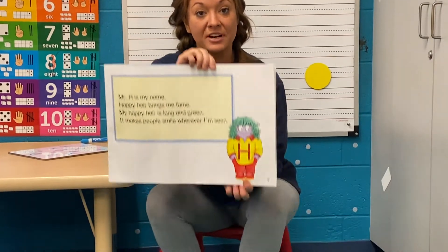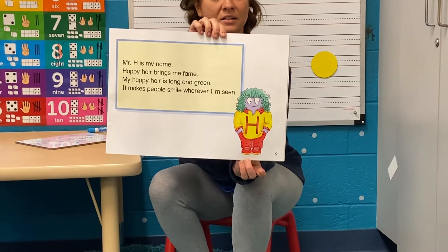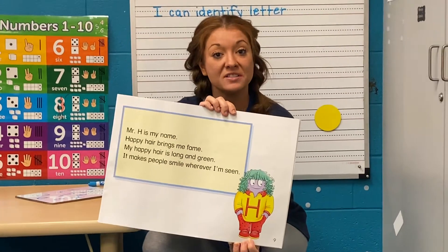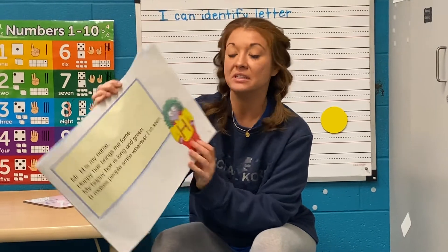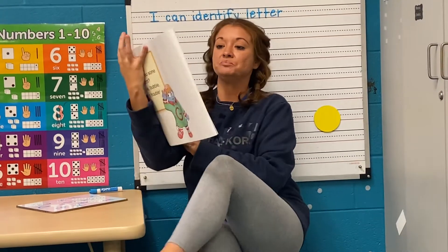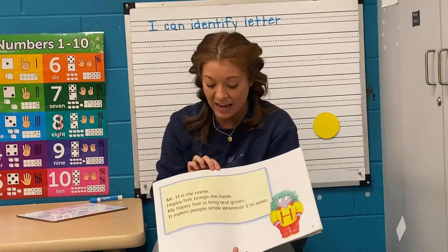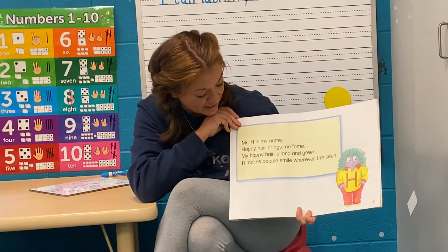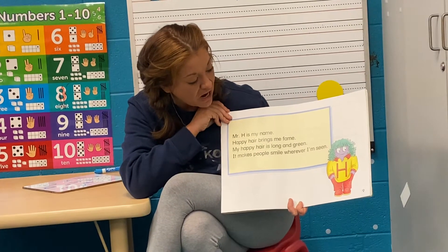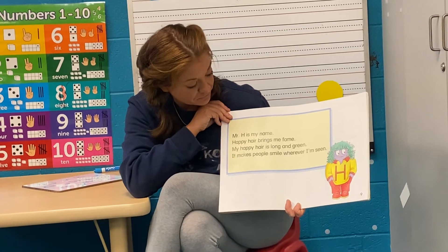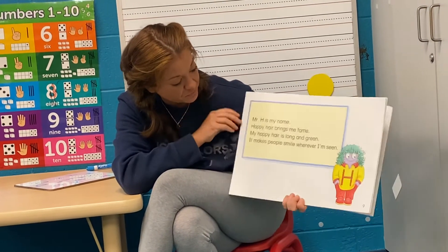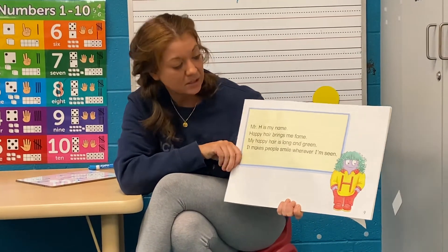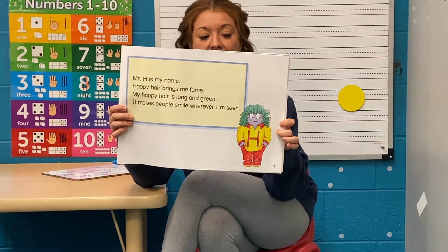Now can you tell me who this friend is? That's right, that's Mr. H! And what does he have? Happy hair! 'Mr. H is my name, happy hair brings me fame. My happy hair is long and green, it makes people smile whenever I'm seen.' So what was he talking about? His happy hair — look at his green happy hair, Mr. H!